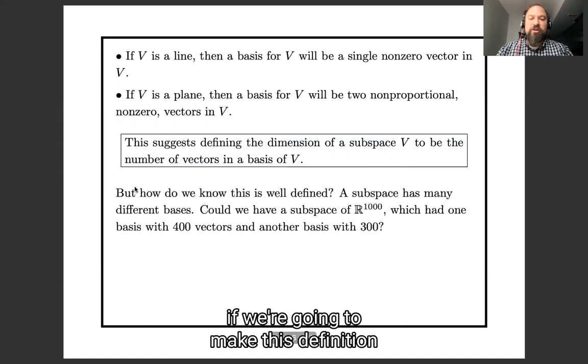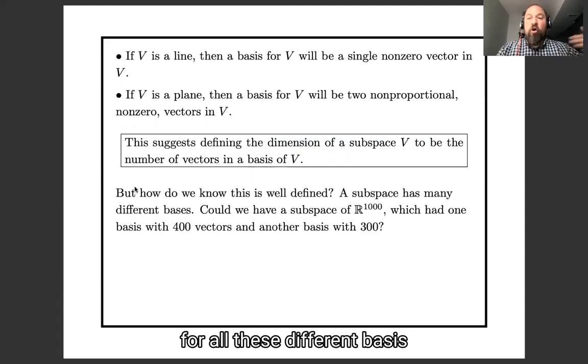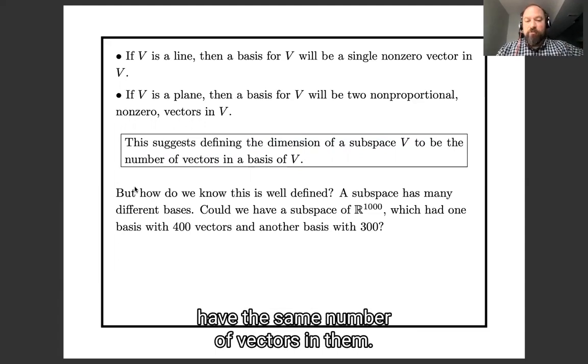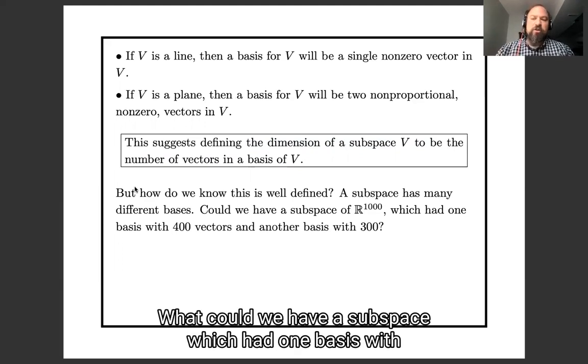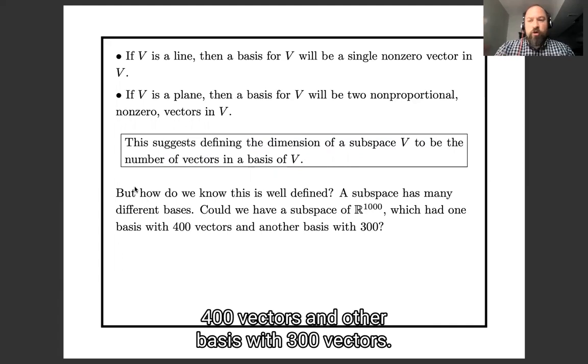Now, if we're going to make this definition, it had better be true that all these different bases have the same number of vectors in them. So is it clear that that's true? Or could we have a subspace which had one basis with 400 vectors and another basis with 300 vectors?